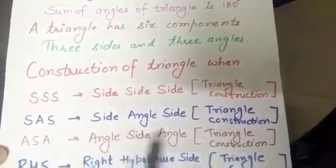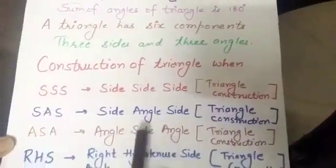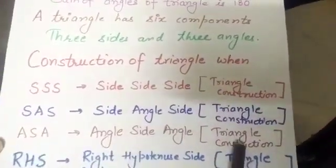ASA, angle, side, angle when two angles and the included side is given for construction.